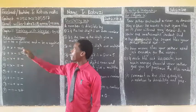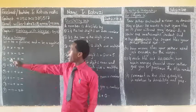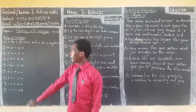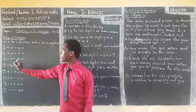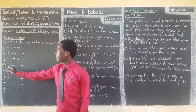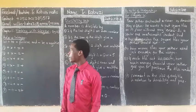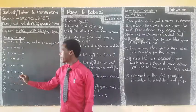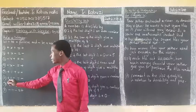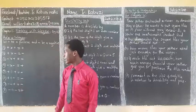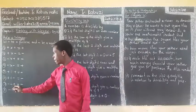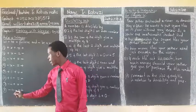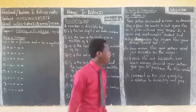A positive times a positive, we get a positive. A positive divided by a positive, we get a positive. And a negative divided by a positive, we get a negative.